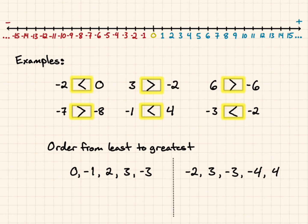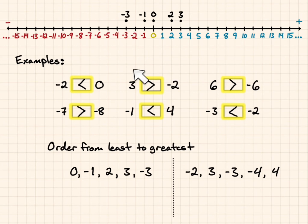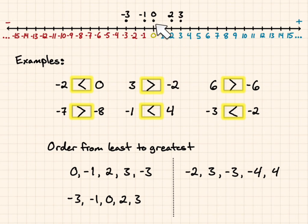Now for ordering — you're going to put these numbers on the number line. We'll start with 0, then negative 1, 2, 3, and negative 3. Now we're going to write them down from left to right, which is least to greatest: negative 3, negative 1, 0, 2, and 3.